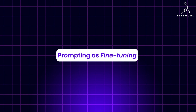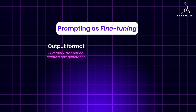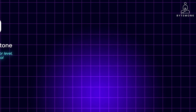Prompting can also work as fine-tuning because it provides instructions. When you provide a prompt to an LLM, you essentially give it specific instructions about what you want it to do with a given input. This can include the desired output format — such as specifying whether you want a summary, translation, creative text generation, etc. — or a style and tone indicating desired formality, humor level, or emotional tone. You can also provide specific information by asking the LLM to include relevant context or details. While traditional fine-tuning involves modifying the model's internal parameters through extensive training on new data, prompting offers a more flexible and efficient approach.